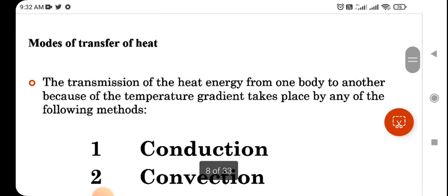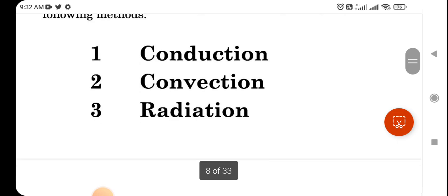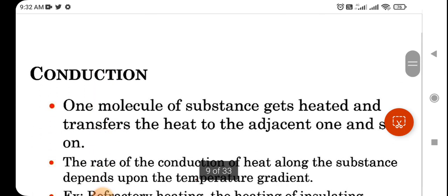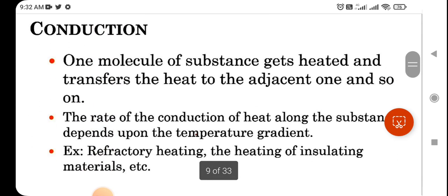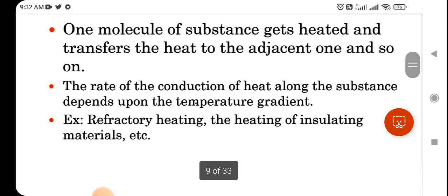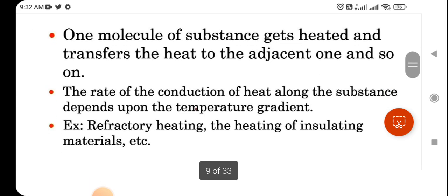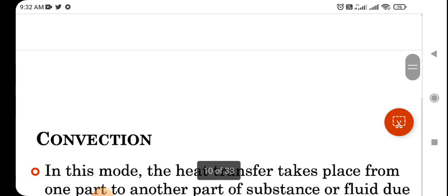There are three main sources of heat transfer: conduction, convection, and radiation. What is conduction? When one molecule of a substance gets heated and transfers the heat to adjacent ones, such kind of heating is known as conduction heating, like refractory heating, insulating material heating, etc.